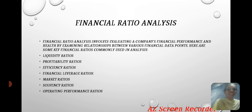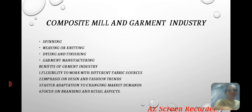Liquidity ratios, profitability ratios, efficiency ratios, financial leverage ratios, market ratios, solvency ratios, operating performance ratios — these are the key components used in financial ratio analysis for mills and garment agencies.